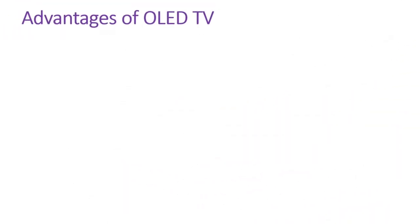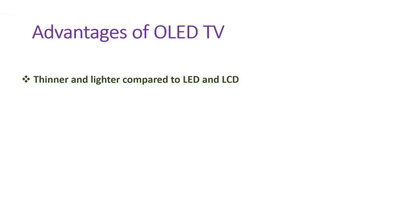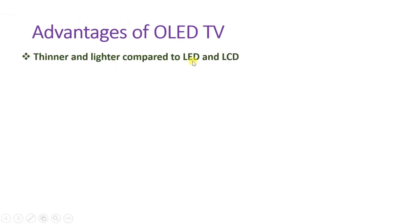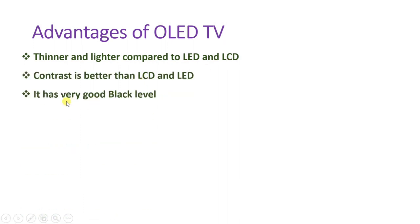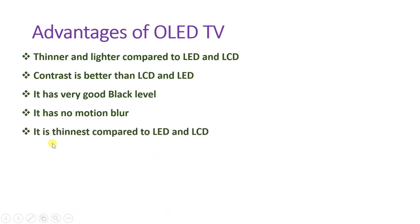Some advantages of OLED: it is thinner and lighter compared to LED, LCD, CRT, and plasma televisions. Contrast is way better compared to LCD and LED. It has the best black level compared to any other television system. It has zero motion blur, and it is the thinnest of any television system — OLED televisions are very slim.